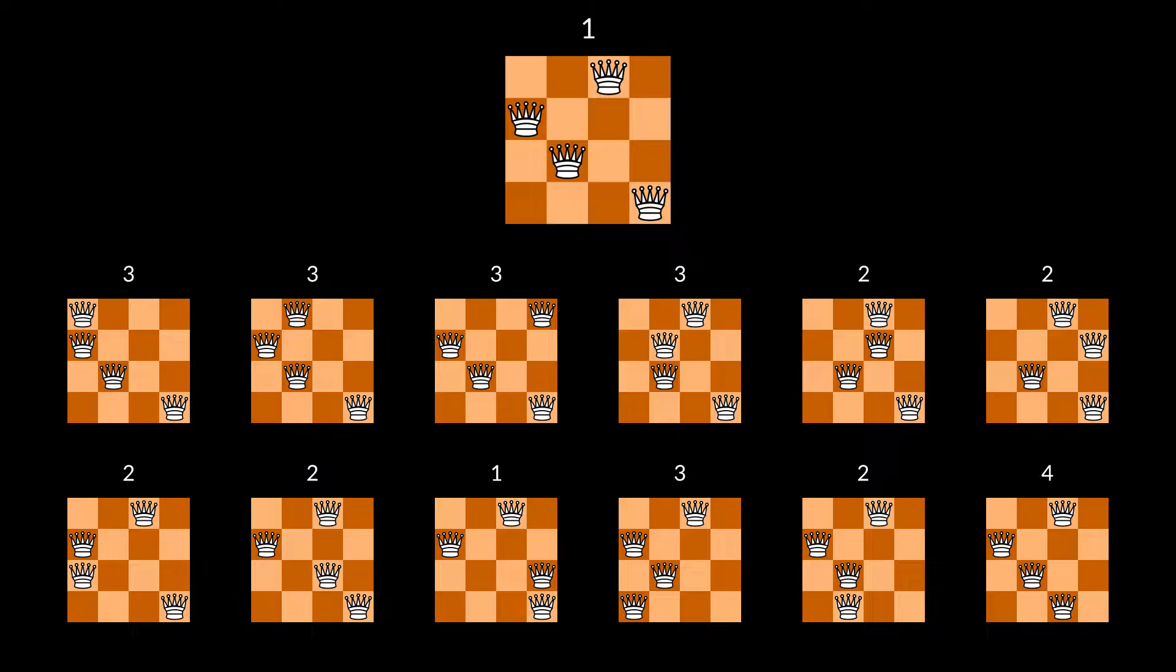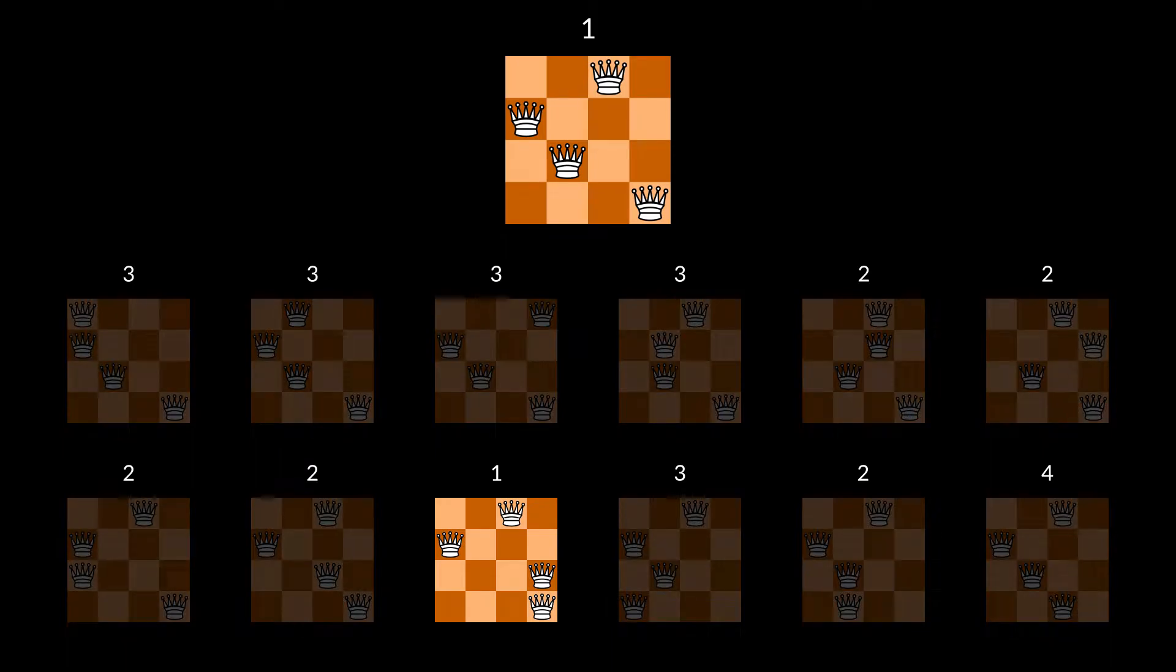Consider this state for example, which has one conflict. There is no way to move a single queen that results in a state with fewer conflicts. The best move produces a state which still has one conflict. So, the algorithm will pick that one.